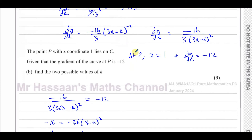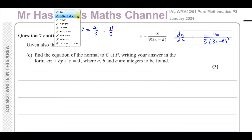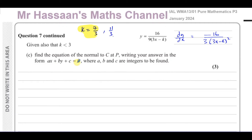Now moving on to part C. We are told that k is less than 3. The two values we found were 7 over 3 and 11 over 3. Since 7 over 3 is less than 3 (as 3 is 9 over 3), we use k equals 7 over 3. The question asks us to find the equation of the normal to C at P, written in the form Ax plus By plus C equals 0. At P, x equals 1 and the gradient of the curve is negative 12.